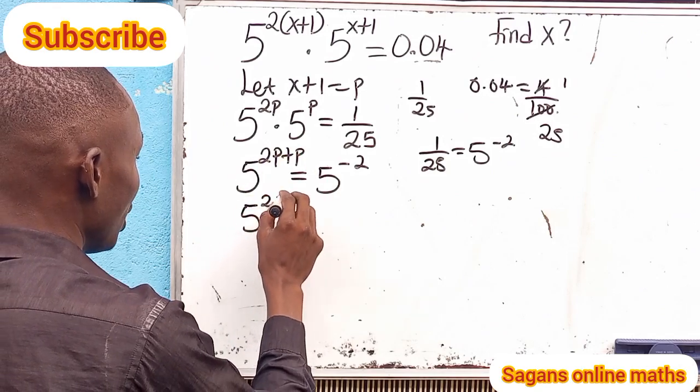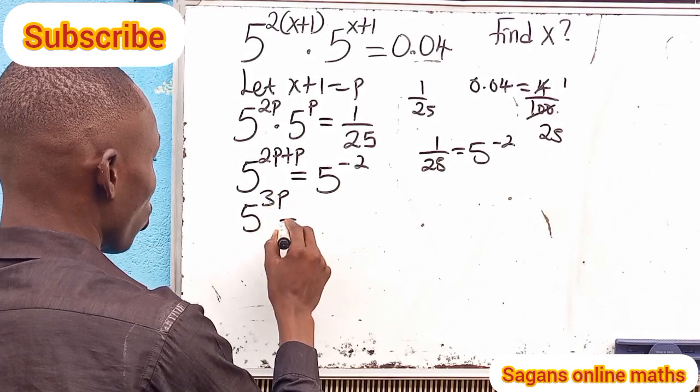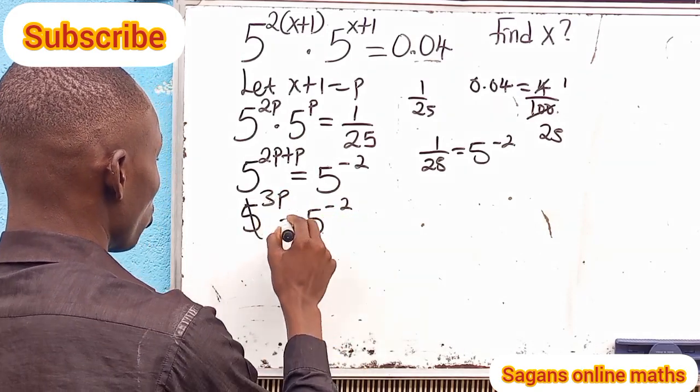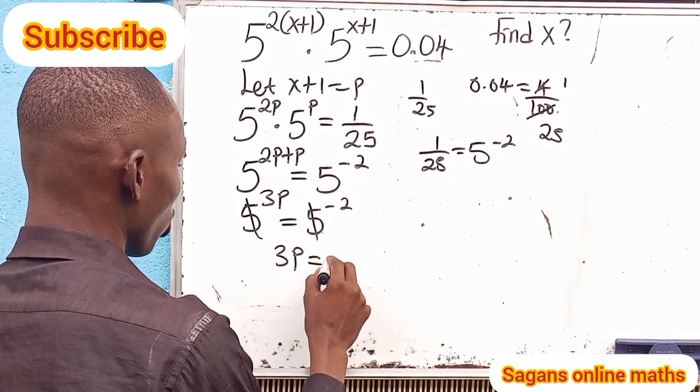Let's add the powers on the left. We have 5 raised to -2p plus -p, which equals -3p. This equals 5 raised to -2. Now since the bases are the same, let's equate the indices.